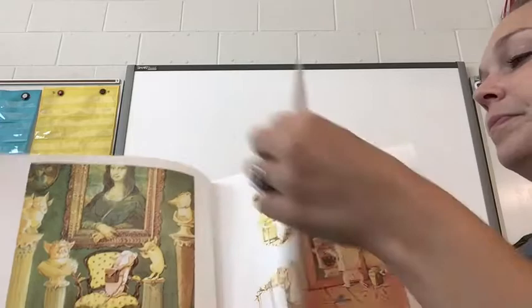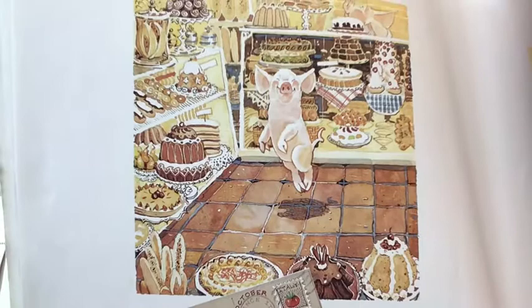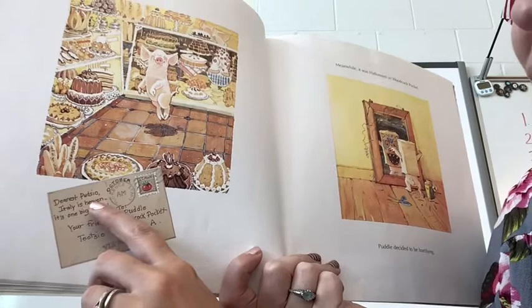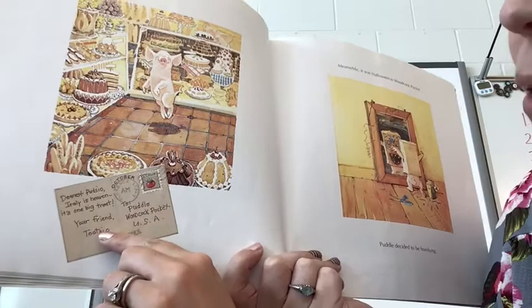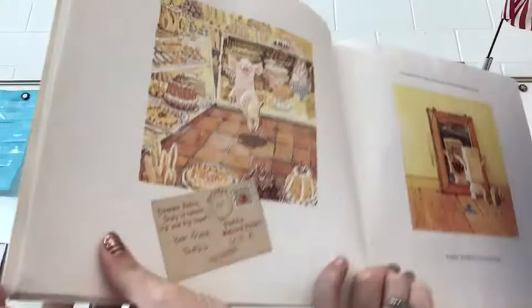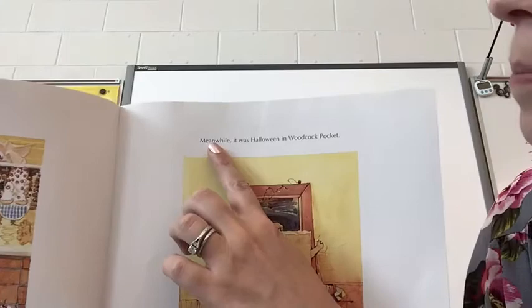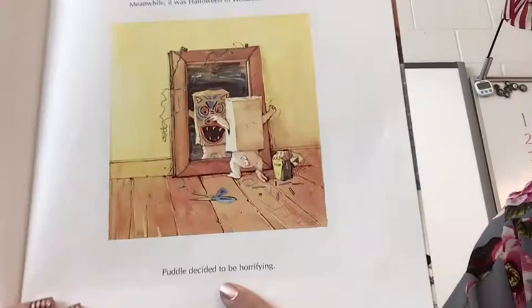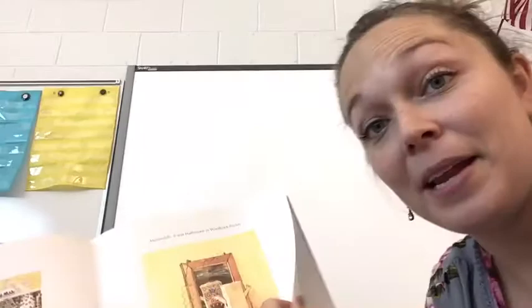'Dear Pudzio, Italy is heaven. It's one big treat. Your friend, Tootzio.' Isn't that where you said you wanted to go next — Italy, Miss Atwood? Are you going to eat all that good stuff in the picture? I would eat all that stuff. Meanwhile, it was Halloween in Woodcock Pocket. Puddle decided to be horrifying. That's going to be coming up soon — we have September, and then October is when Halloween comes.